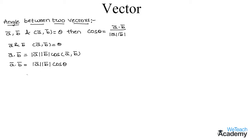Now let us transfer mod a bar and mod b bar to the other side. So we get cos theta is equal to a bar dot b bar divided by mod a bar into mod b bar.